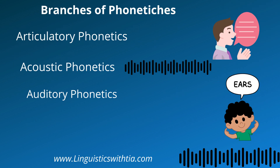Let's have a look at the different branches of phonetics. The first one is articulatory phonetics. The second is acoustic phonetics. And the third one is auditory, or you can say perceptual, phonetics. Articulatory phonetics, as its name suggests, is about articulation or the production of speech. Acoustic phonetics is about the physical properties of the speech sound. Similarly, auditory and perceptual phonetics studies the audition or perception and reception of these sounds via the human ears. So let's discuss all these branches of phonetics.